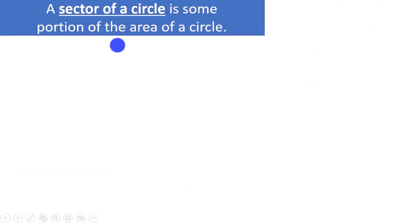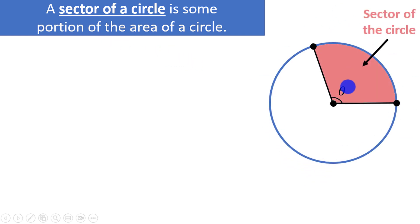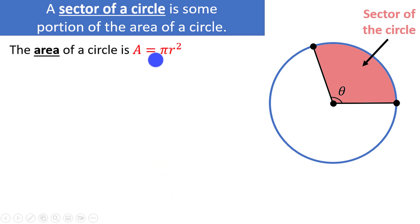Now let's talk about the sector of a circle. A sector of a circle is some portion of the area of a circle — just as arc length was some portion of the circumference. We draw two radii of length r, creating an angle theta between them. The region described in red is the sector of the circle. The area of a full circle is πr², but we only have some portion of the circle.